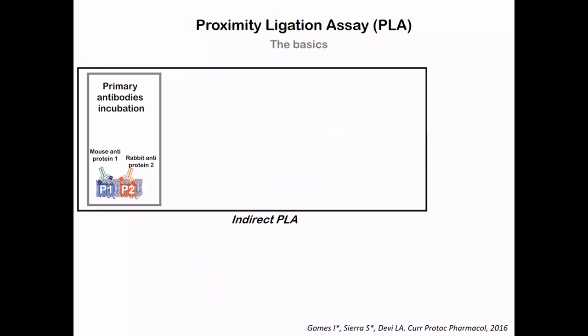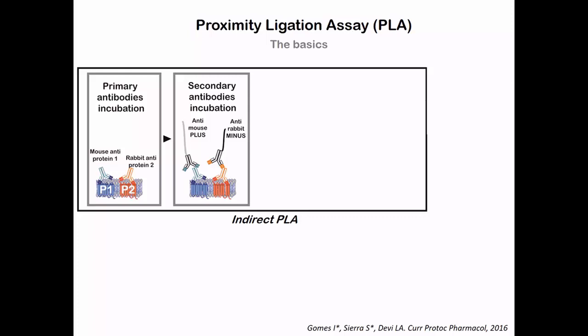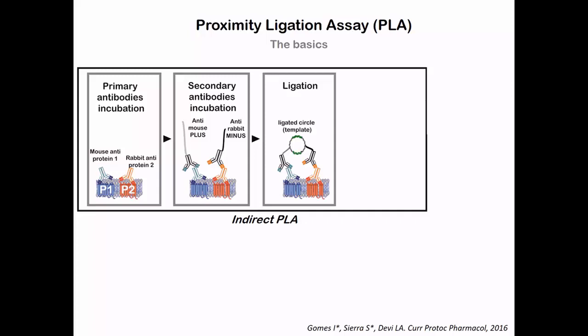I'm going to show you the basics of PLA and then go in detail through the protocol in cells as well as in tissue. Basically, we incubate our sample — where protein 1 and protein 2 are co-localizing — with primary antibodies raised in different species, for example mouse and rabbit. Then we incubate with secondary antibodies tagged to oligonucleotides that are complementary to each other. These are called PLA probes, and they target the species of the primary antibodies — anti-mouse and anti-rabbit.